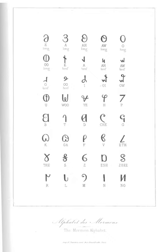In an 1868 article, the Deseret News wrote that the characters, to a person unaccustomed to them, may look strange, but to the eye to which they are familiar they are beautiful. At least four books were published in the new alphabet, all transcribed by Orson Pratt and all using the Russell's House font: the first Deseret alphabet reader (1868), the second Deseret alphabet reader (1868), the Book of Mormon (1869), and a Book of Mormon excerpt called First Nephi–Omni (1869).